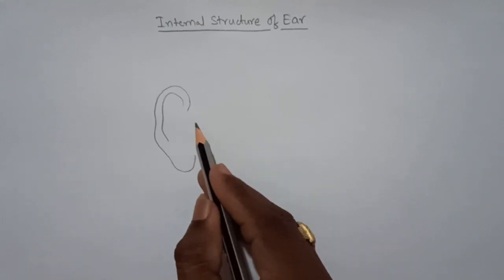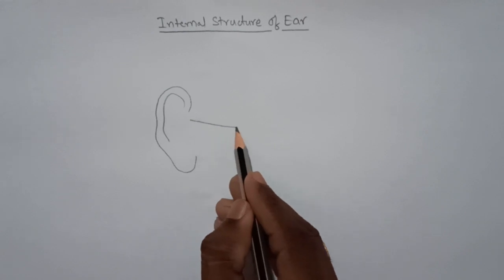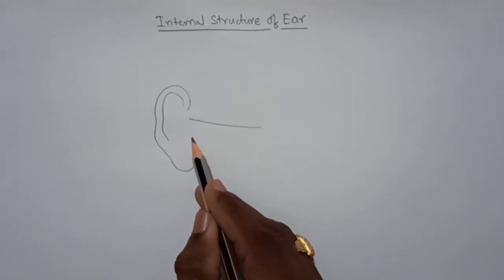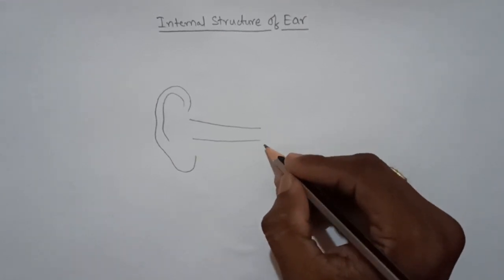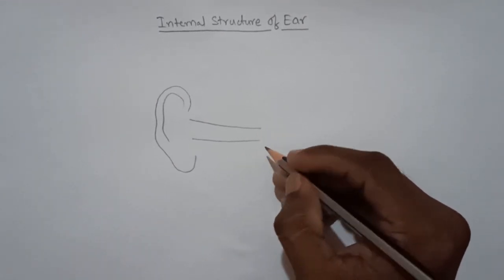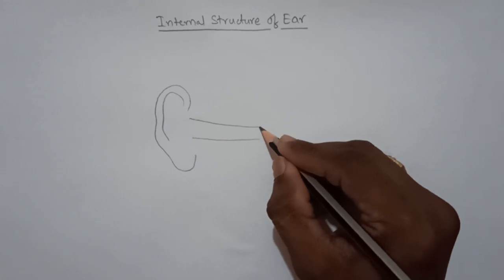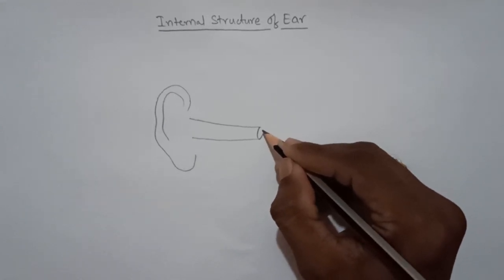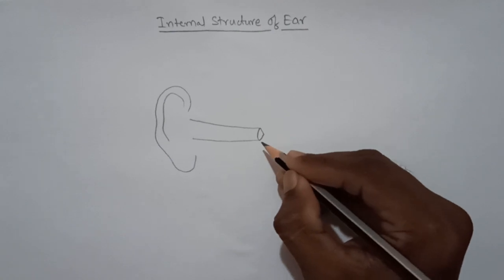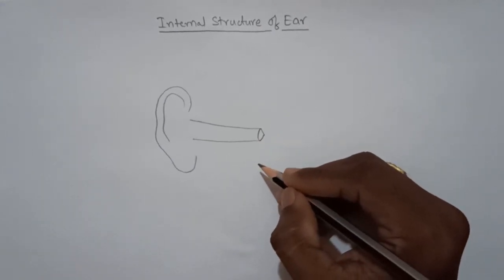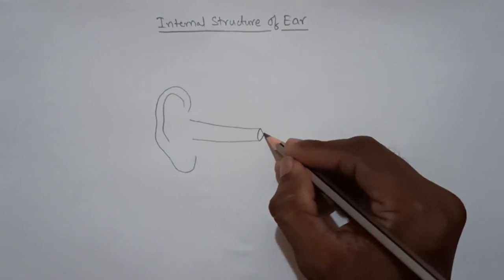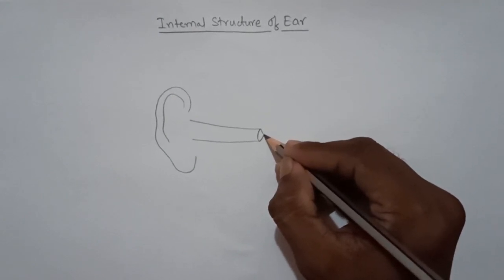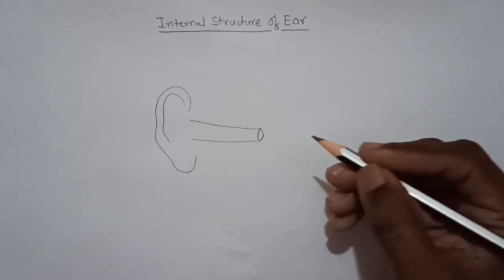From here we have to draw the auditory canal. And at the end of that auditory canal, we have to draw a roughly cone-shaped ear drum. From here we have to draw three ossicles.